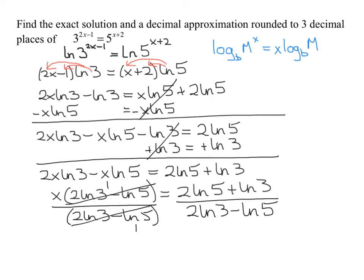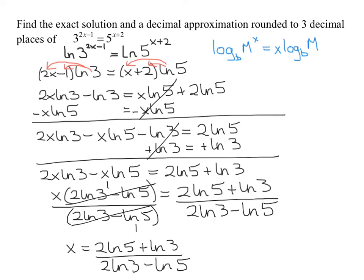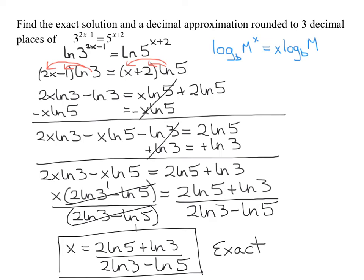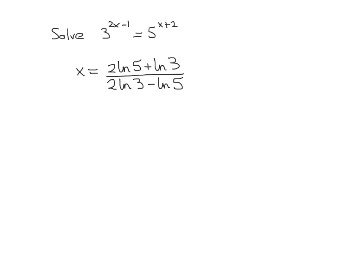So X equals two times the natural log of five plus the natural log of three, all divided by two times the natural log of three minus the natural log of five. This is the exact solution. If you're asked for just the exact answer, that is it. I was running out of room on the previous slide, so I've written down the original problem and the exact solution we arrived at.